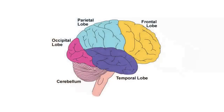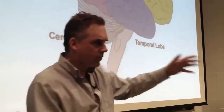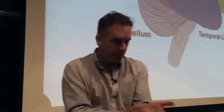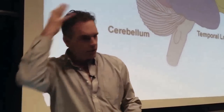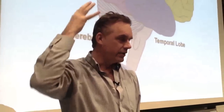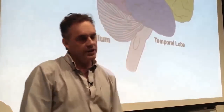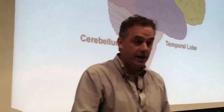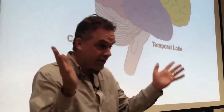Then there's the occipital lobe, which is used for vision, more or less. And the parietal lobe helps you keep track of who you are from a bodily perspective — where your body is located in space and who you are as an embodied person. For example, if you lose the right parietal lobe because of a stroke, you lose the left side of your body, and even more weirdly, you lose the left side of everything.